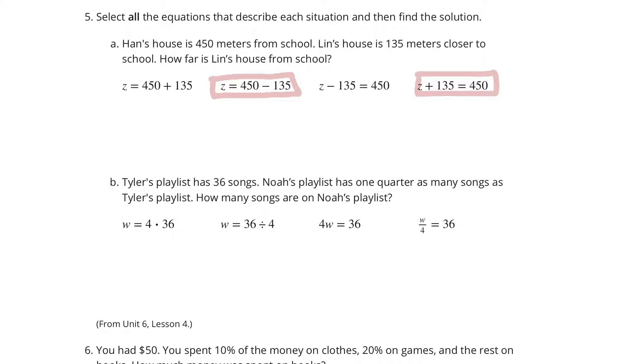And let's explain why those are. If Han's house is 450 meters from the school and Lin's house is 135 meters closer to school, how far is Lin's house from the school? If we were to take the 450 minus the 135, we'll get that distance of z. Additionally, if we take that distance z and add the 135 meters that Lin's house is closer, we would get to Han's house at 450 feet. Now, to solve, if I simply subtract 135 from both sides here, either way we get z equals 315.